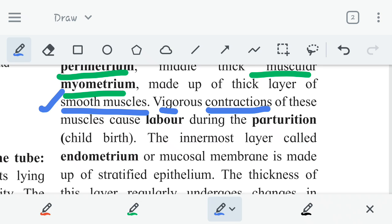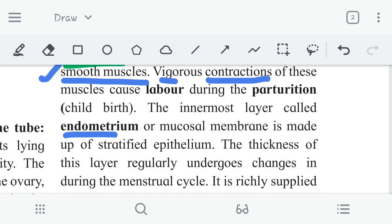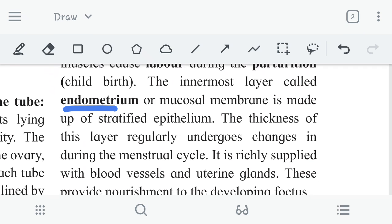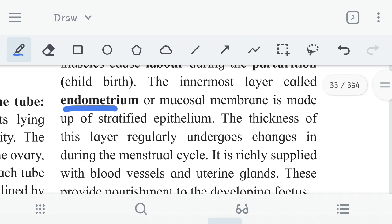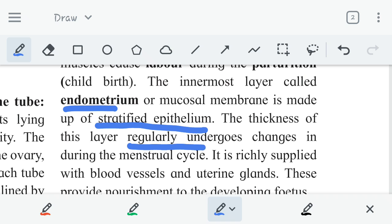The innermost layer is called endometrium. The innermost layer is endometrium or mucosal membrane. Mucosal membrane is another word used for the endometrium. And it is made up of stratified epithelium, which is a type of tissue with various types of cells. The thickness of this layer regularly undergoes changes during the menstrual cycle. Now why does this happen?